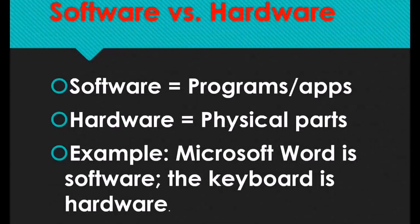The next one is software versus hardware. Software are programs or apps, while hardware are physical parts. For example, Microsoft Word is software while the keyboard is hardware. The keyboard is hardware because we can touch it, we can feel it. So anything that is physical is hardware.